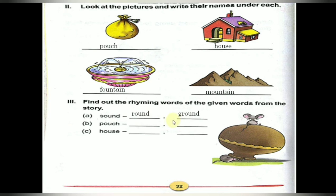These all are rhyming words. Next word: pouch — P-O-U-C-H. Another rhyming word from the lesson — couch, C-O-U-C-H. One more — ouch, O-U-C-H. Pouch, couch, ouch — these words end in C-H and are rhyming words.